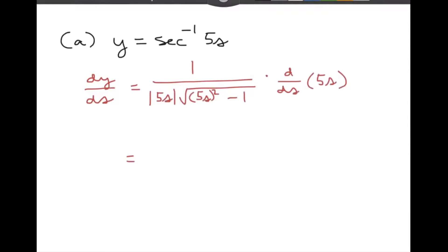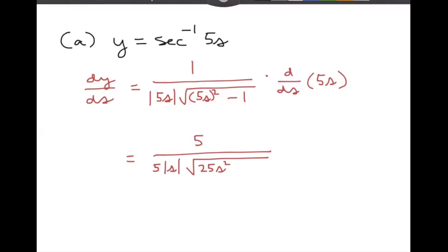The derivative of 5s is just going to give you a 5. The absolute value of 5s can be written as five times the absolute value of s. And then this I'm going to write as 25s squared minus one. Notice you can get rid of those fives, and the derivative just comes out to be one over the absolute value of s times the square root of 25s squared minus one.